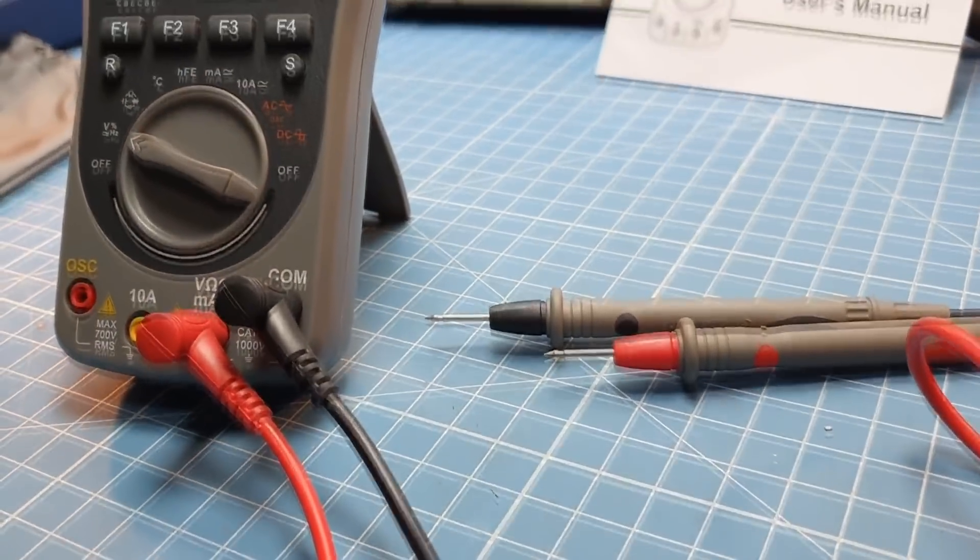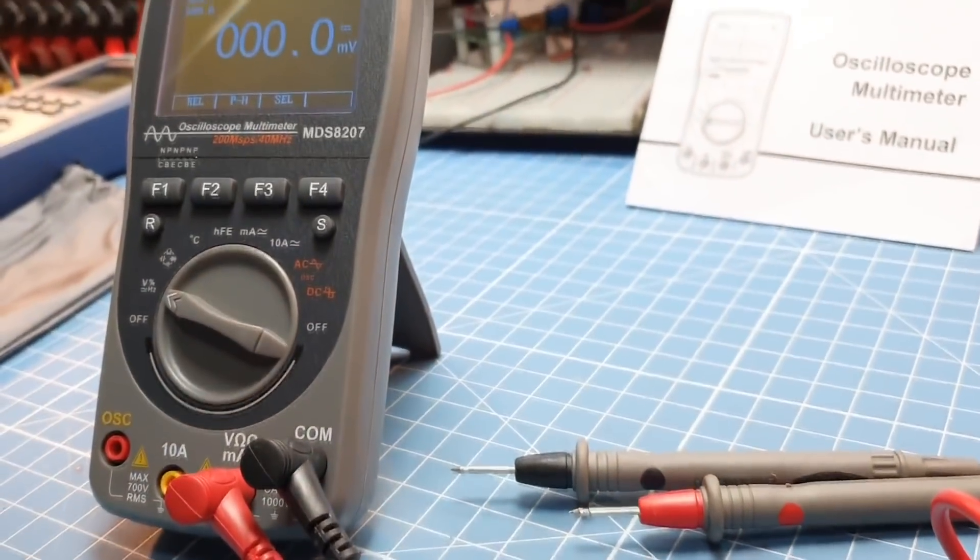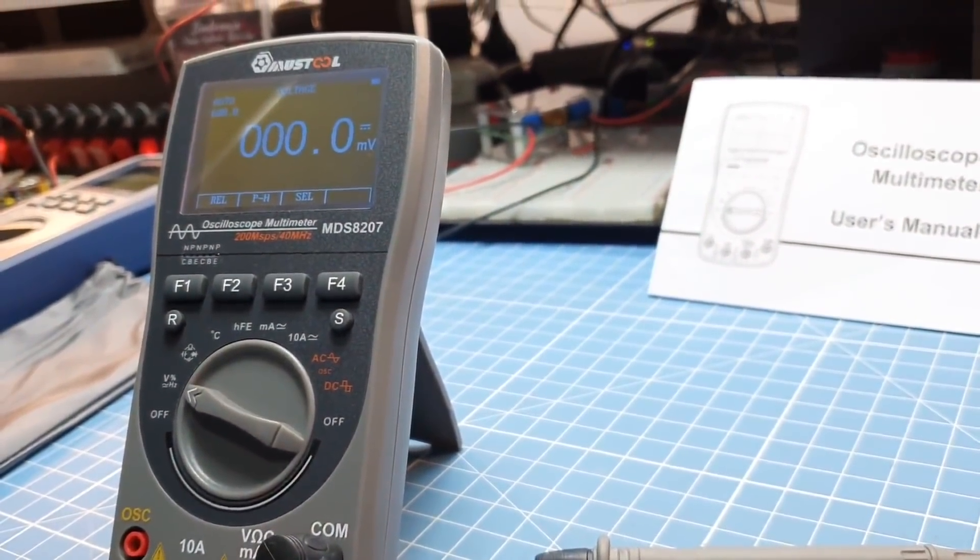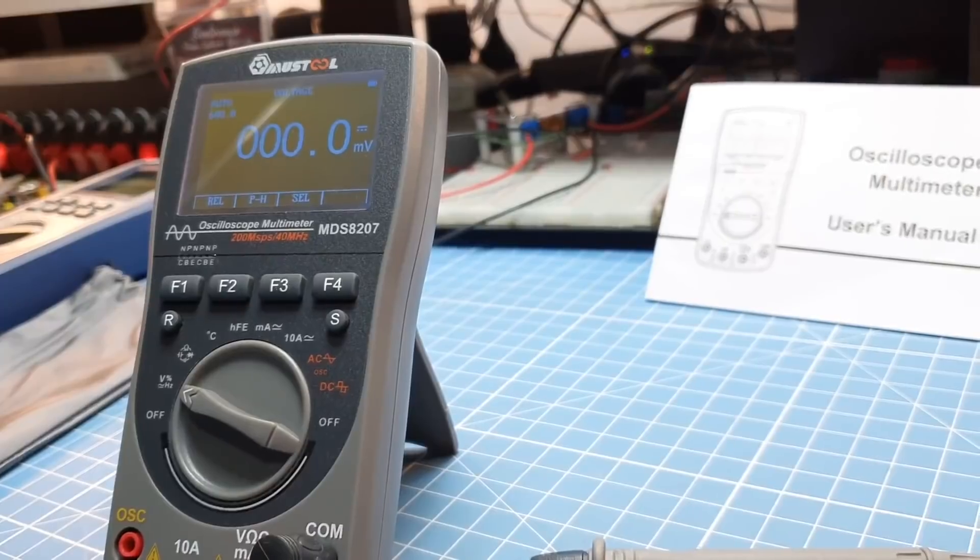As versões anteriores, MDS-8205, também conhecida como ET-201, ou mesmo a evolução a MDS-8206, não podiam ser consideradas osciloscópio.